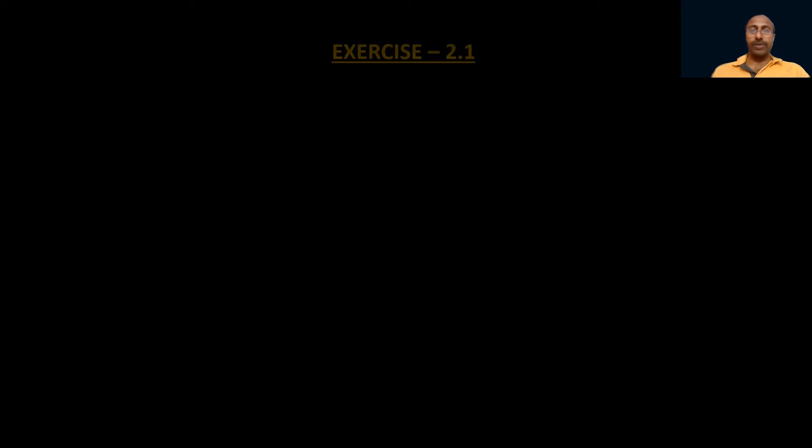Dear students, welcome to my classroom and also welcome back to the chapter Sets. In the previous part, we learned about the definition of a set and its properties — that a collection of well-defined objects is a set. We use curly brackets to denote sets and capital English alphabets to name them. We also learned the symbols 'belongs to' and 'does not belong to', and the roster form and set builder form of a set.